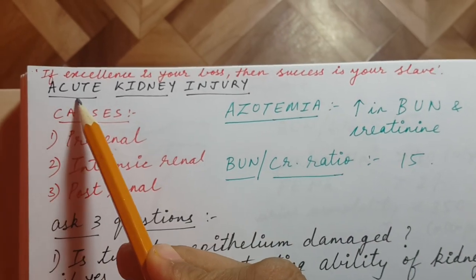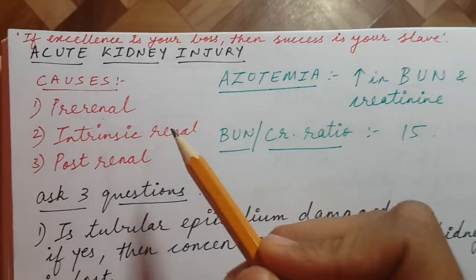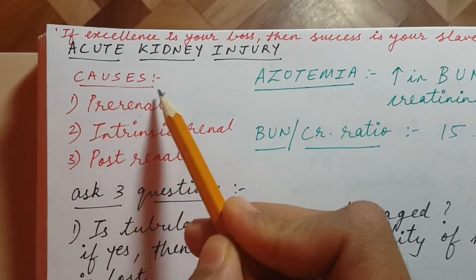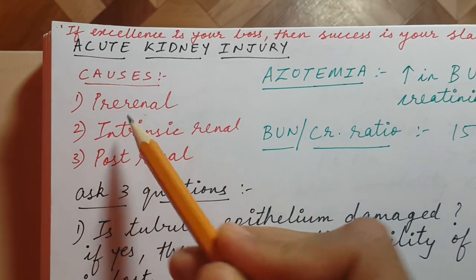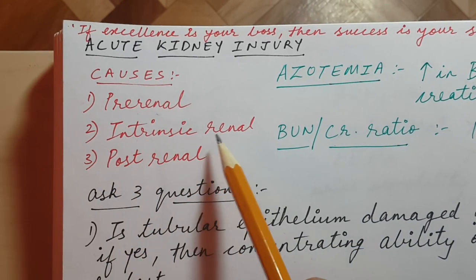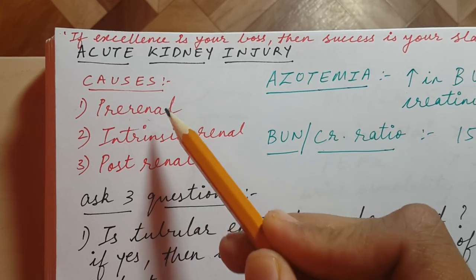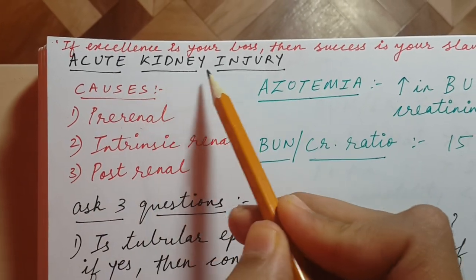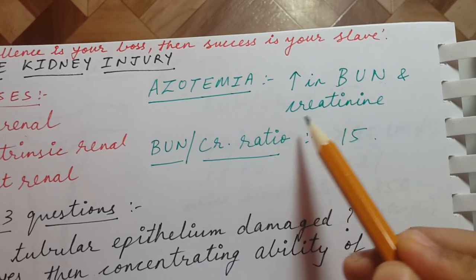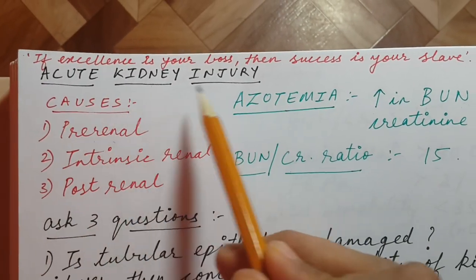Hello everyone, today we will be discussing acute kidney injury. Due to my Step 2 CK preparation I was not able to make videos, but now I will try my best to make videos more frequently. Acute kidney injury has three causes — three different locations: pre-renal (before the kidney), intrinsic renal (damage to the renal parenchyma), and post-renal. The hallmark manifestation of acute kidney injury is azotemia, which is an increase in blood urea nitrogen and creatinine.